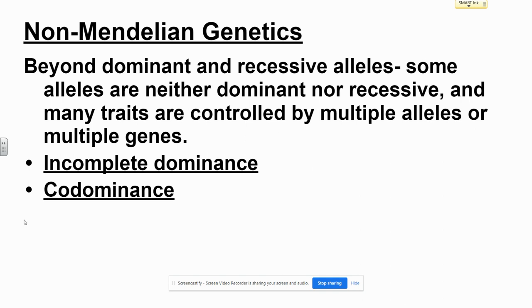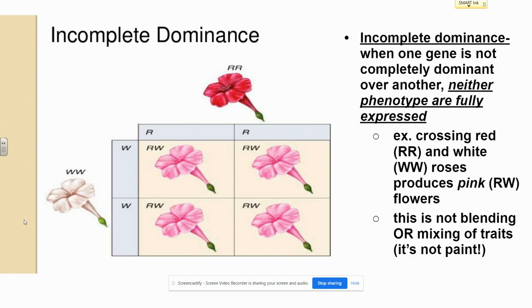Today's mini-lecture will explain two types of non-Mendelian genetics: incomplete dominance and co-dominance.